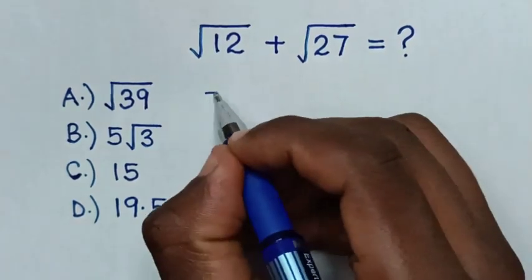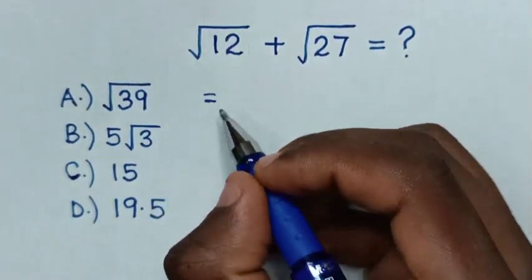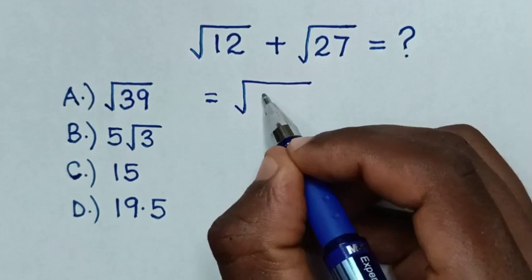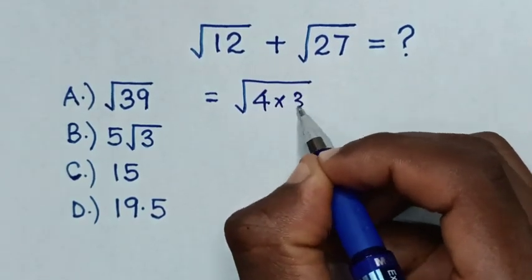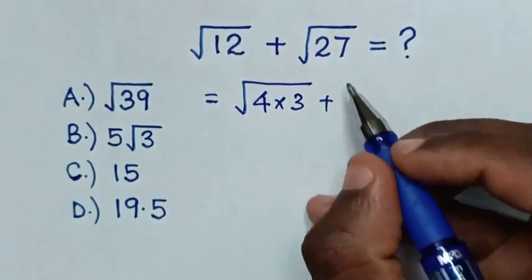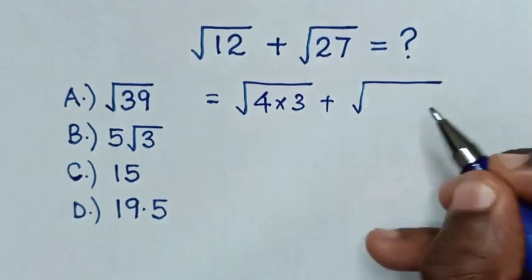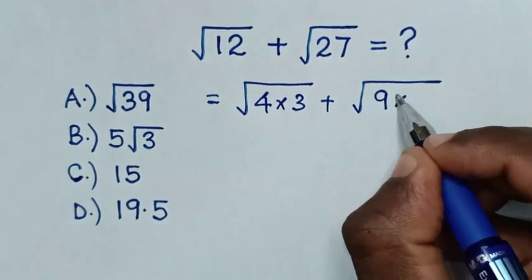So this will be equal to square root of 12 is same as square root of 4 times 3, then plus square root of 27 is same as square root of 9 times 3.